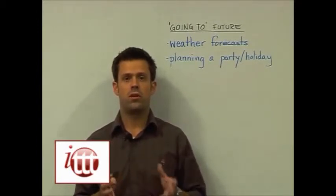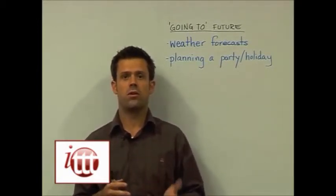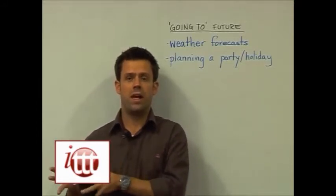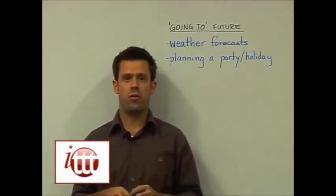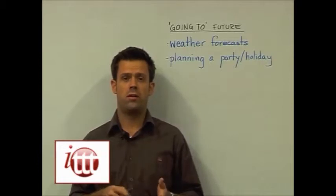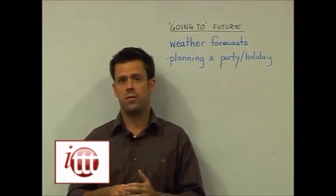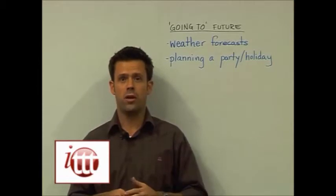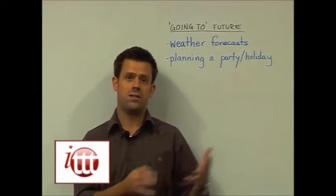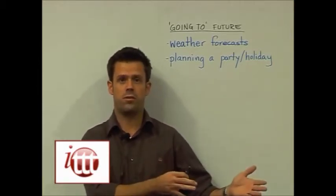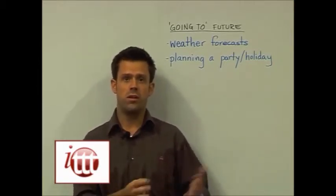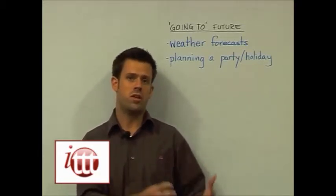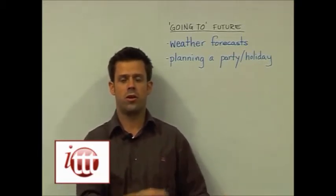We can also plan a party, because the Going to Future tense is used for future plans that have already been set forth. We could plan a party or a holiday. We could say, I'm going to have a Halloween party, and I'm going to come as this person or that person, and we're going to bring this food or that food, and we're going to do this at the party or that at the party, and so on and so forth.